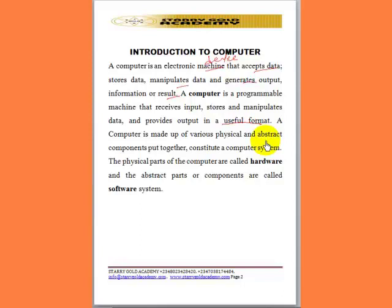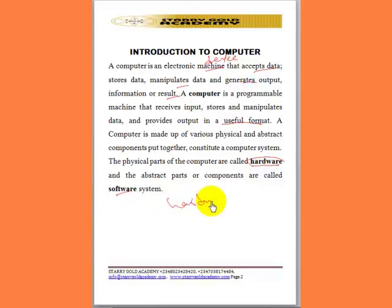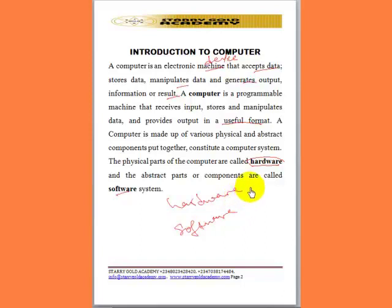A computer system is made up of real physical and abstract components put together, which constitutes a computer system. The physical component is known as hardware, while the abstract component is known as software. A computer system comprises two major parts: the hardware and the software.